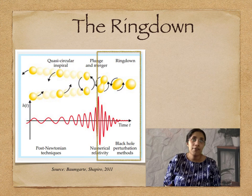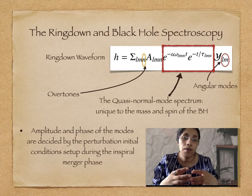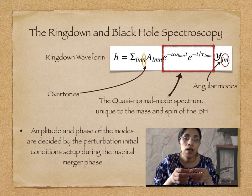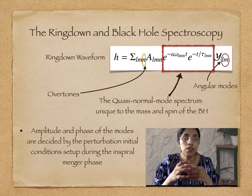Therefore, it's a very important tool for conducting tests of GR. A binary black hole ringdown has a simple description in the context of perturbation theory. It can be described as the evolution of a perturbation on the spacetime of the final black hole that is formed. The waveform is rather simple and is composed of a superposition of damped sinusoids with characteristic frequency and damping time.